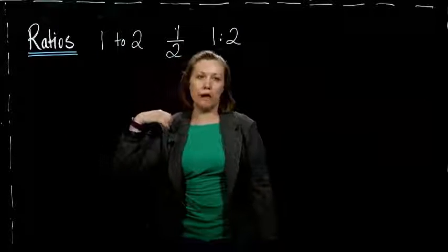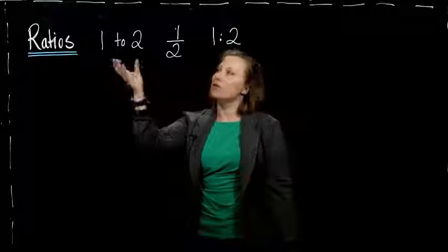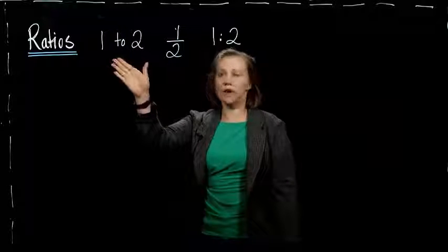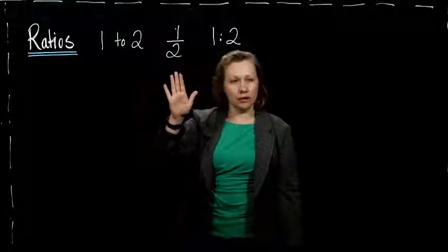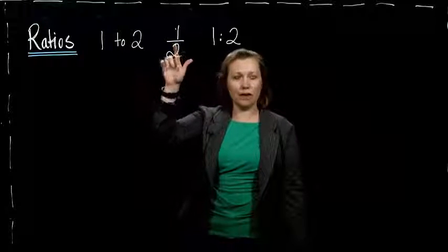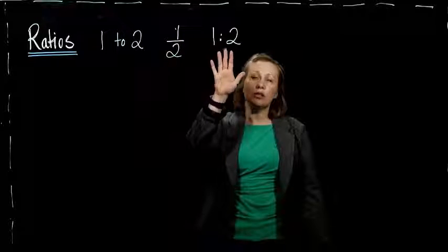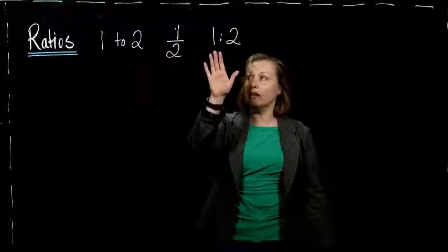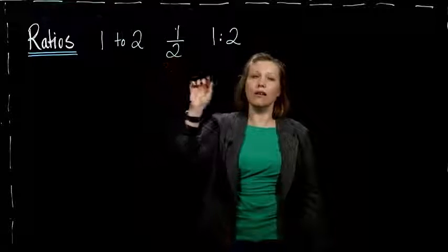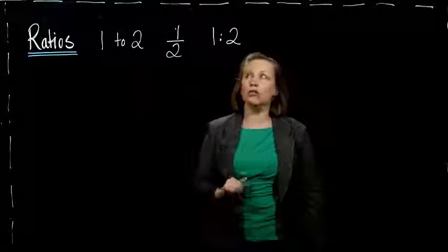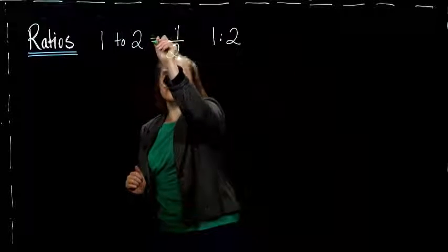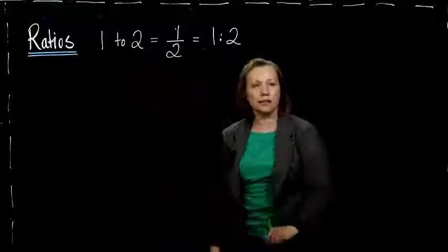Ratios just compare two quantities. We could say it in words: 1 to 2. Sometimes you see them written as a fraction, 1 divided by 2 or 1 over 2. Sometimes you might see them written with a colon, and it reads just like the English version: 1 to 2. These are all equivalent ways to write the same thing.